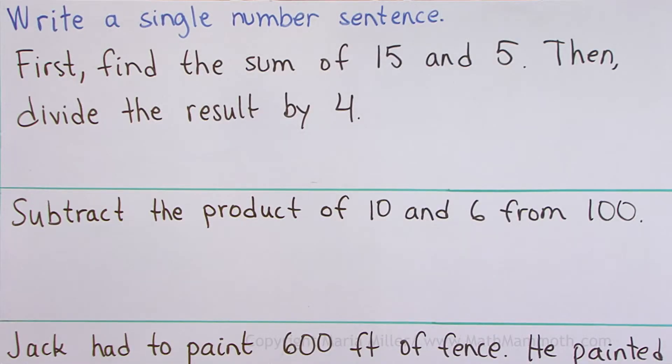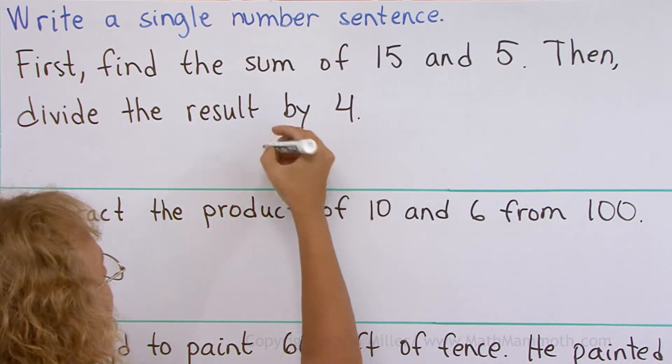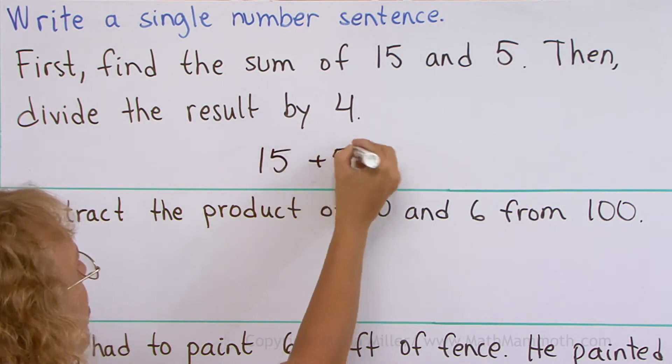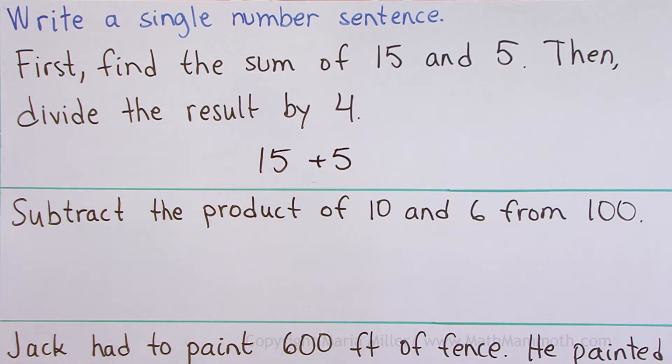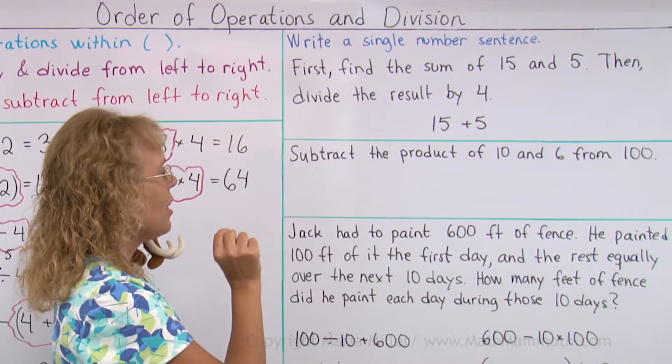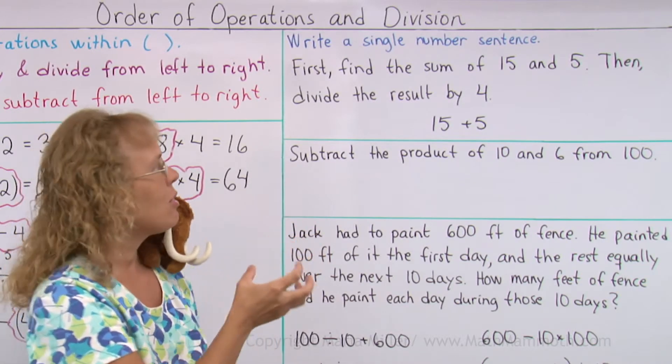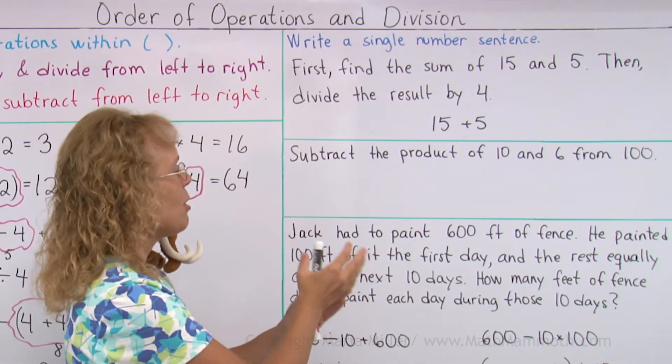First, find the sum of 15 and 5. Sum means addition, so we have 15 plus 5 to do first. And then divide the result by 4, okay? Now that makes 20, right? And we need to divide the 20 by 4.